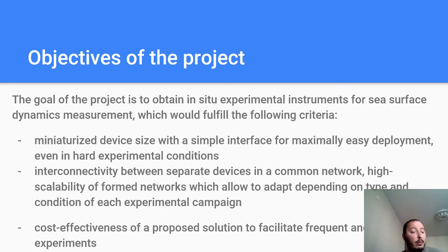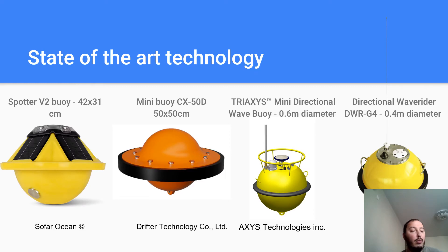However, the complexity of field measurements and a number of methodological limitations — for example, clouds for optical measurements, the need to account for orbital movements of waves and anomalies in radar data, the high cost of spatial instruments, their installation and maintenance — all lead to the fact that the scientific community has an extremely small number of measurement instruments for surface velocity vectors and spectral characteristics of surface waves. Often such measurements have limited accuracy and spectral resolution.